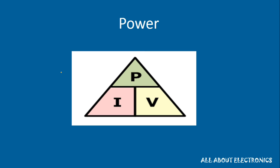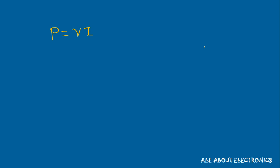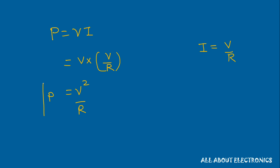In the last video we saw that power in electrical circuits is given by P = V × I. According to Ohm's law, current I = V/R. Substituting this into the power equation, we get P = V × (V/R) = V²/R. So power can also be defined as V squared divided by R.